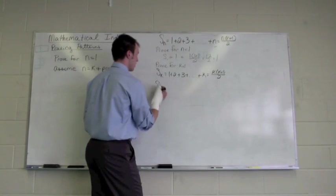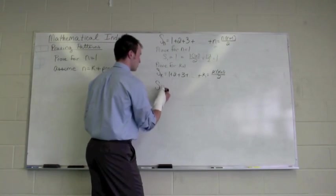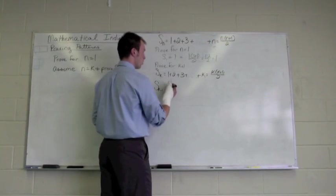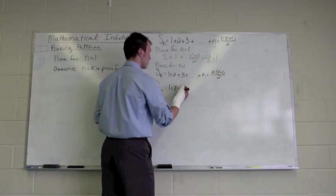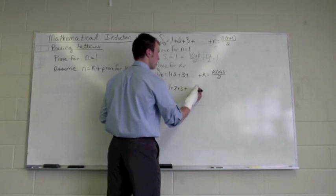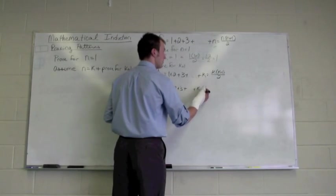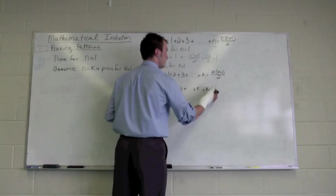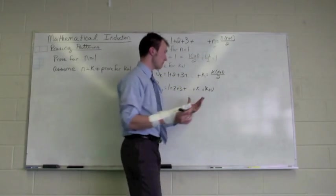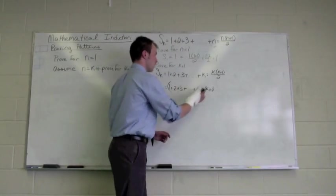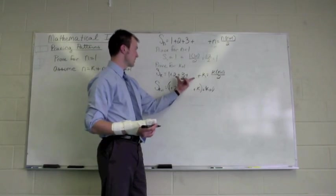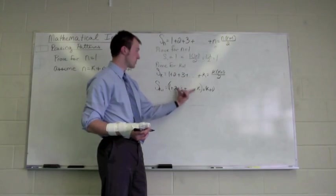And the sum at k plus 1 is going to be the 1 plus 2 plus 3, plus so on and so forth, out to k, plus the value k plus 1. Now essentially, this entire piece is this top sum, the sum right above it.